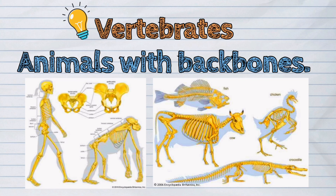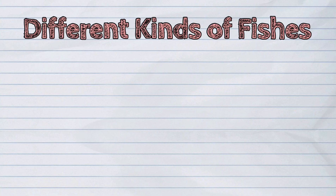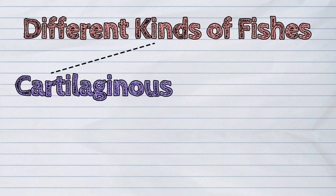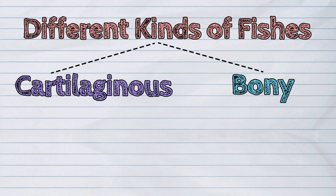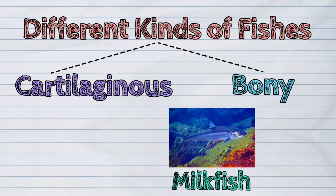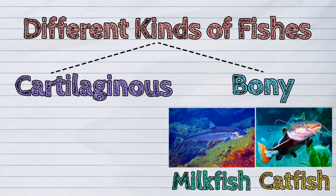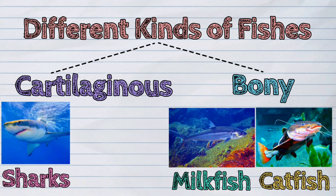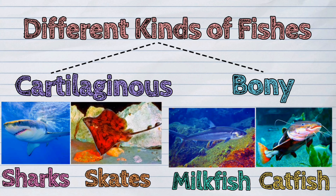The first example of this classification are the different kinds of fishes. Some fish are cartilaginous while others are bony. Milkfish and catfish are bony fishes. The sharks and the skates are cartilaginous. Their bodies are covered with scales.